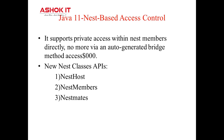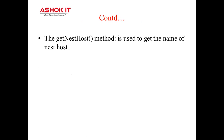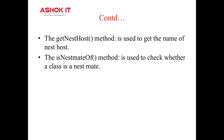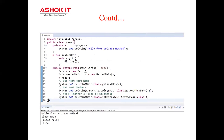This new JVM access rule — nest-based access control — allows private access within nest members and provides new class APIs: getNestHost, getNestMembers, and isNestmateOf. The getNestHost method is used to get the name of the nest host. The isNestmateOf method is used to check whether a class is a nest mate or not. The getNestMembers method returns an array of nest members including classes and interfaces. In the example, it demonstrates how an inner class accesses a private member of the outer class and returns nest host, nest mates, and nest members.